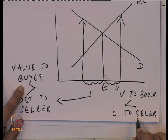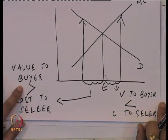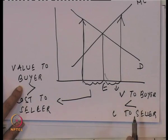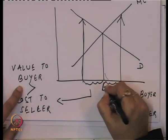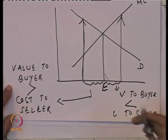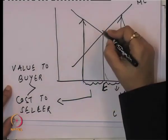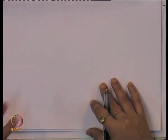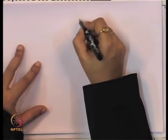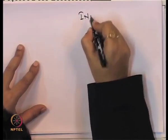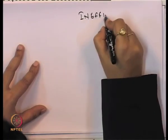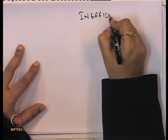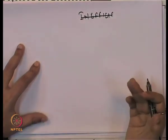Whether the monopolist actually follows the efficient level of output is debatable, because there is always inefficiency in the output level, and that is how the firm generates a deadweight loss. The efficient quantity is where MC intersects the demand curve, but in practice the monopolist does not produce at that level.